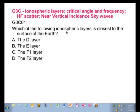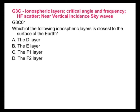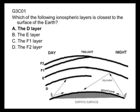Which of the following ionospheric layers is closest to the surface of the Earth? We saw that in the graphic. That's the D layer. Here we are again with the graphic — the D layer is the one nearest to the Earth.